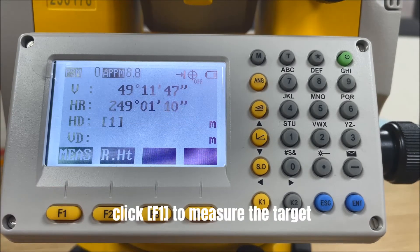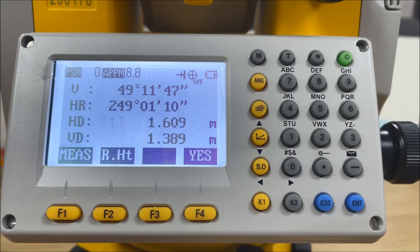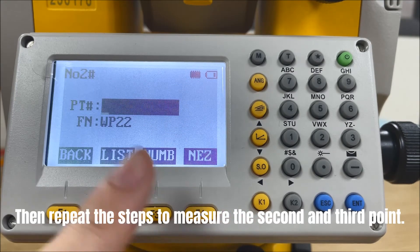Aim at the target center, click F1 to measure the target. Then repeat the steps to measure the second and third point.